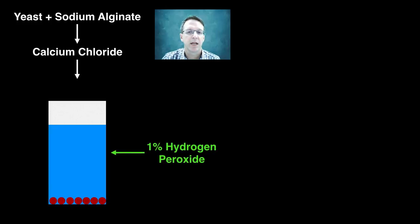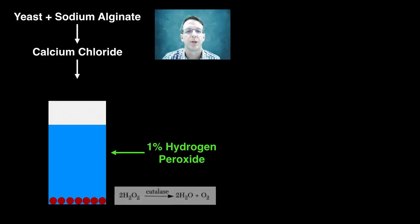But as the catalase in the yeast reacts with the hydrogen peroxide, the oxygen that is released is retained in the spheres, making them rise to the top. So the time it takes for the spheres to rise is a direct measure of the rate of reaction. So using different temperatures of hydrogen peroxide solution would allow us to actually answer the research question.